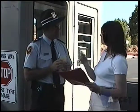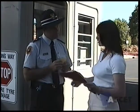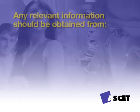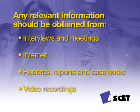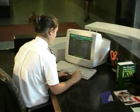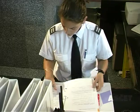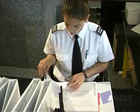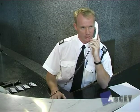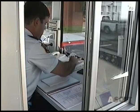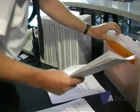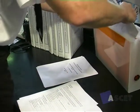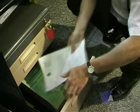If there are any areas of your role that you are unsure of, be sure to clarify these with the relevant persons such as your supervisor. Any relevant information required should be obtained from information sources such as interviews and meetings, the internet, records, reports and case notes, and video recordings. Be sure the methods you use to collect this information are reliable and make efficient use of any resources required. All business equipment being used such as email, fax and scanning should assist in sourcing, collecting and organising information. Any relevant workplace procedures must be identified and complied with in accordance with your OHS requirements such as controlling and minimising risk and first aid.